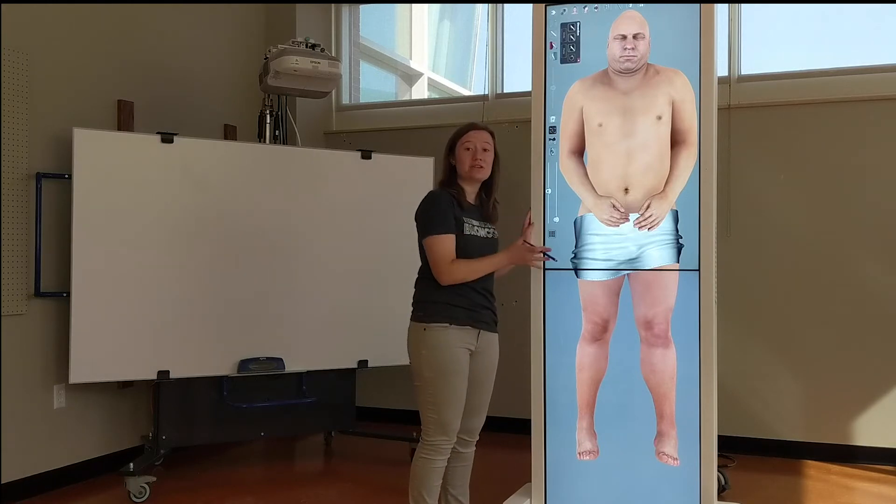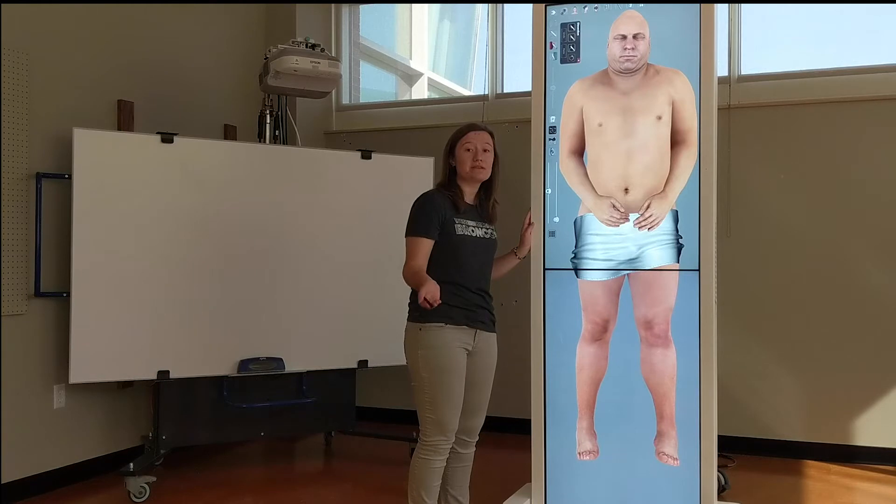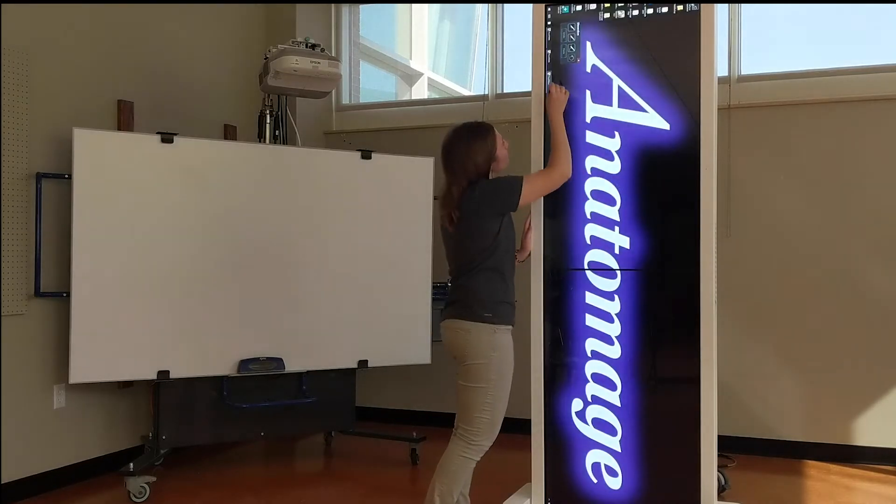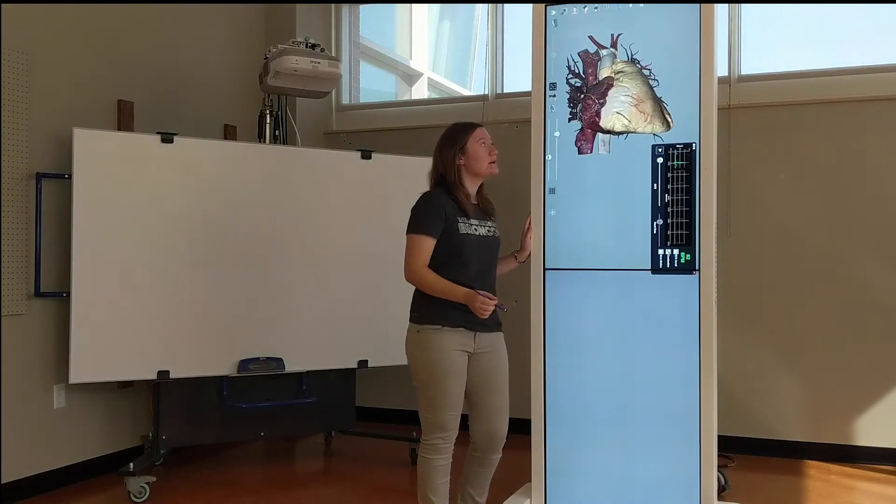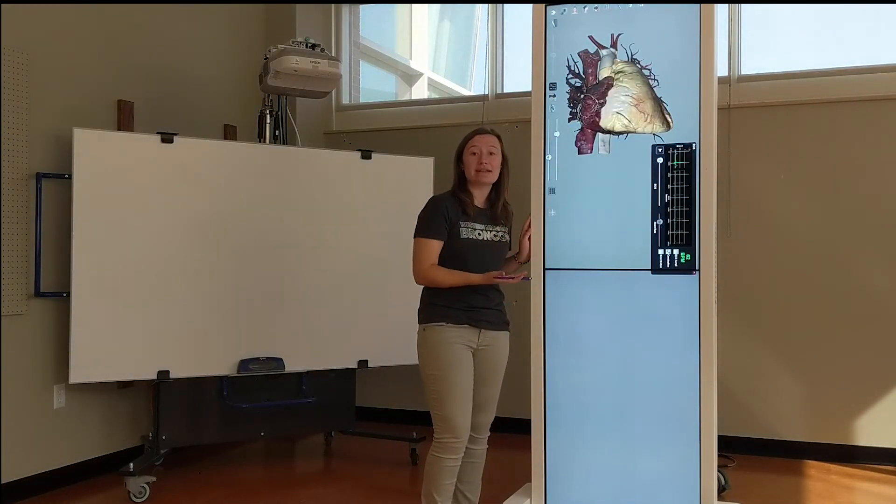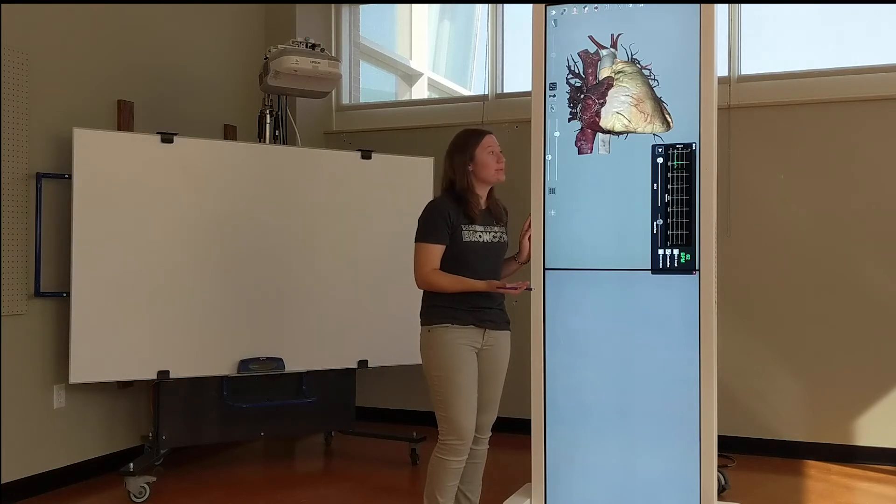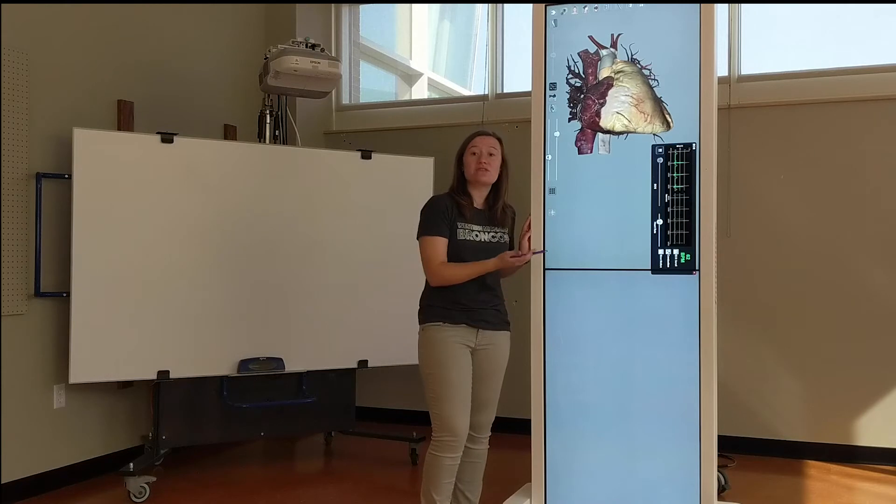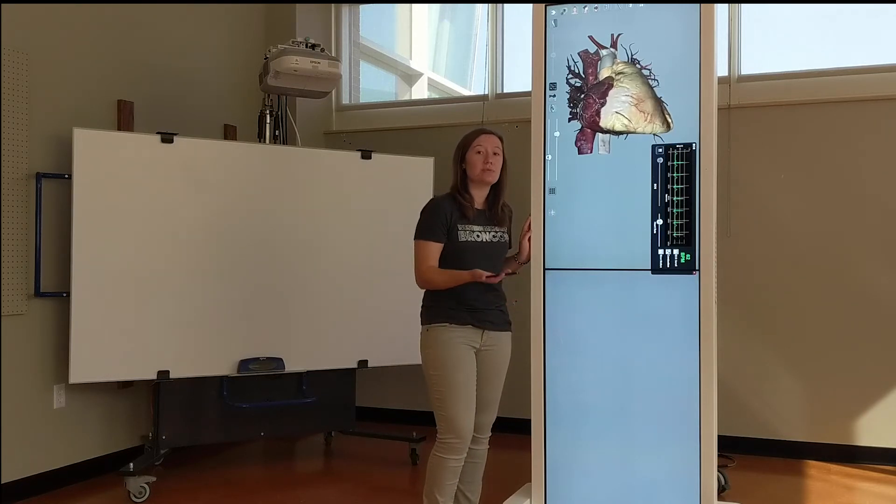Along with dissection on the full cadaver, there are also different parts of this table that can be dissected such as the heart. This is also a heart that has been scanned onto this table. It shows how it beats. This is part of the physiology section of the table and it's very useful to see actual motion.